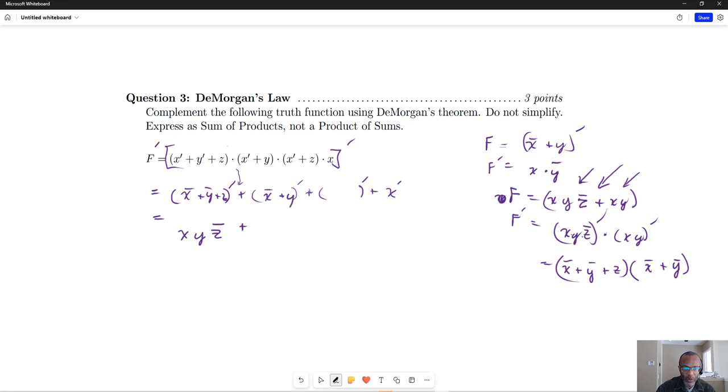Which was x' ORed with y and all of that gets complemented, so that becomes x ANDed with y'. And then where we had x' ORed with z, that becomes x ANDed with z'. And we've already worked out that one so that is just simply x'. So that's the answer that we were looking for.